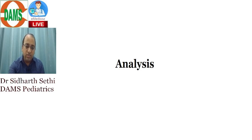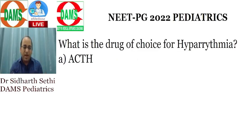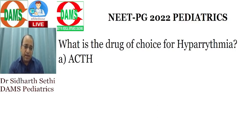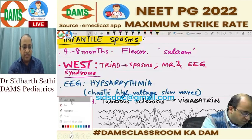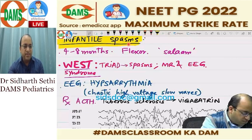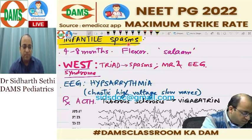You just need to work and revise these topics. The first question, which I asked in each and every class of mine, was on the drug of choice for infantile spasms or hypsarrhythmia. In every class of mine I discuss infantile spasms, and I told you that the typical EEG for infantile spasms is hypsarrhythmia, which is chaotic high voltage slow waves.